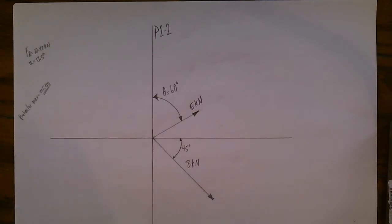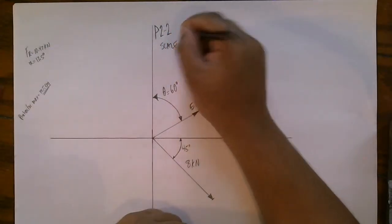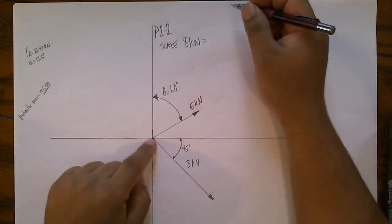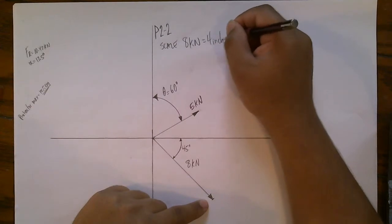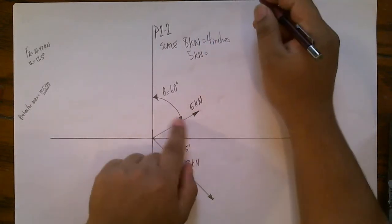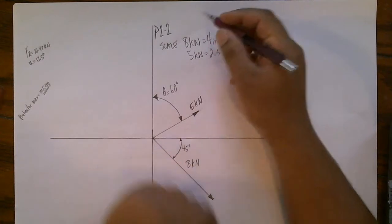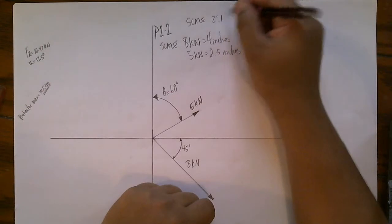The first thing I did is I drew it out on paper and I used a scale. My scale is, I had my 8 kilonewtons from here to here, that's 4 inches, and the 5 kilonewtons is 2.5 inches, so the scale is 2 to 1.